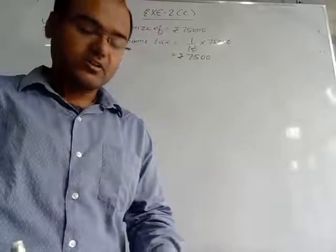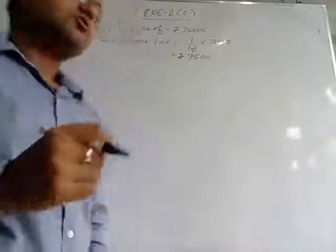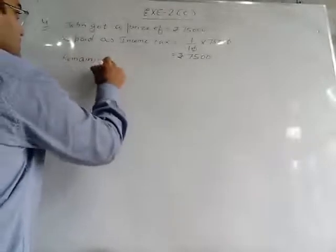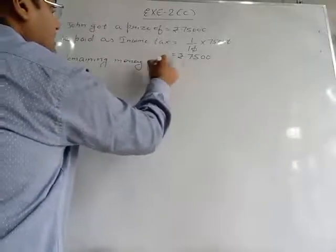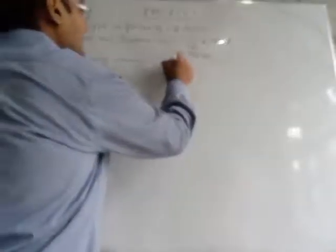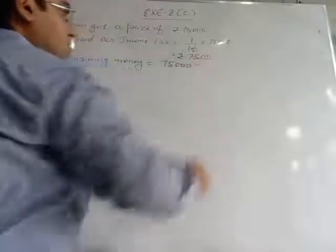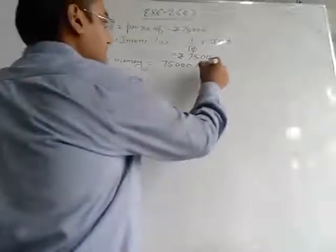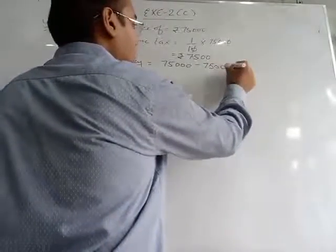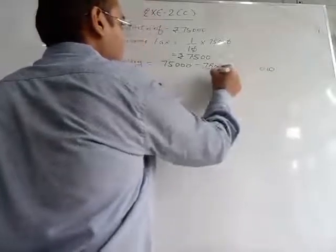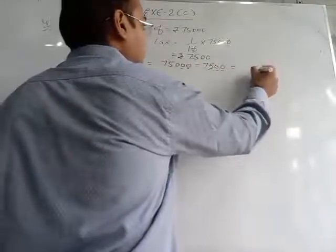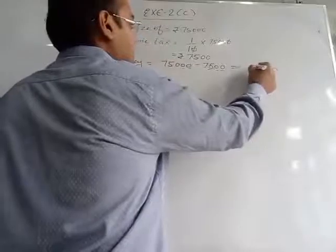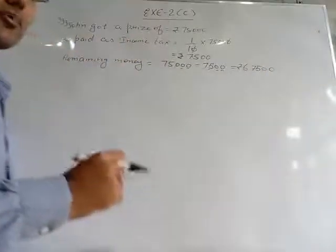Out of the remaining money — first we find the remaining money. Total money he got was 75,000. We subtract the income tax of 7,500. On subtracting: 75,000 − 7,500 = 67,500 rupees remaining with him.